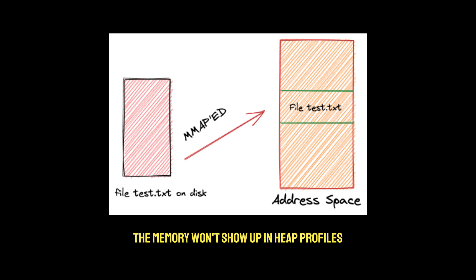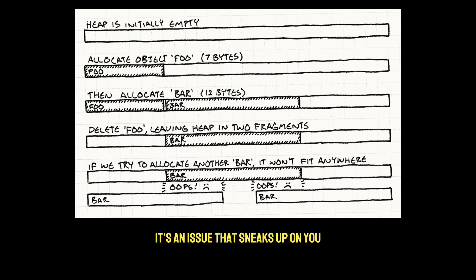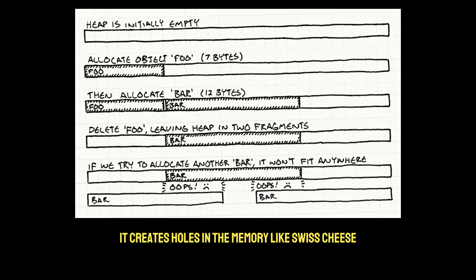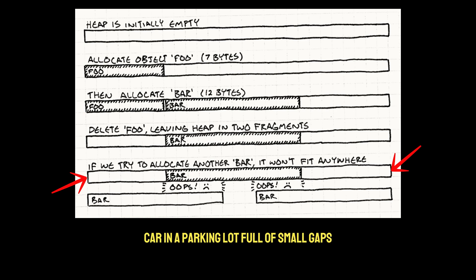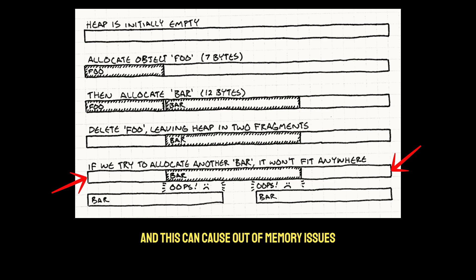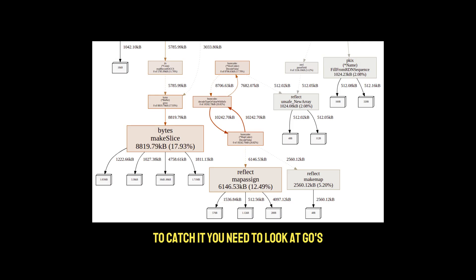The painful part is that this memory won't show up in heap profiles. The heap profile looks fine, but the process still gets killed. Now let's get into memory fragmentation — an issue that sneaks up on you in long-running services. Your app keeps allocating and freeing memory in small chunks. Over time, it creates holes in the memory, like Swiss cheese. You have plenty of free memory in total, but no single block is big enough for a new allocation. It's like trying to park a big car in a lot full of small gaps. Fragmentation builds up slowly and is difficult to detect. To catch it, use Go's pprof memory profiles or OS-level tools like smem or pmap.